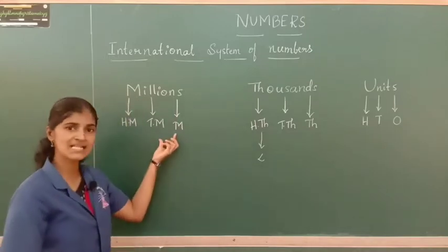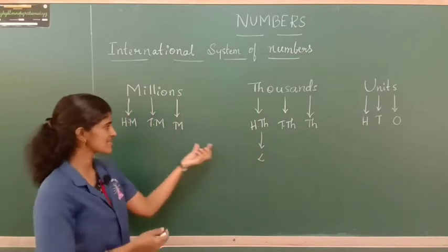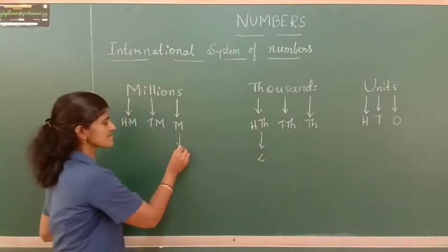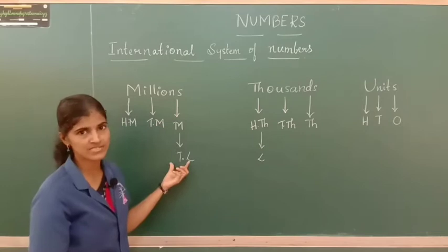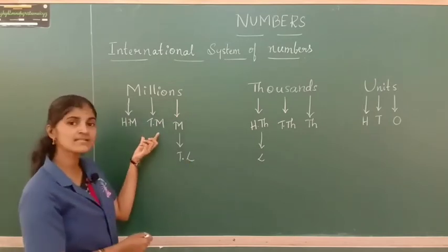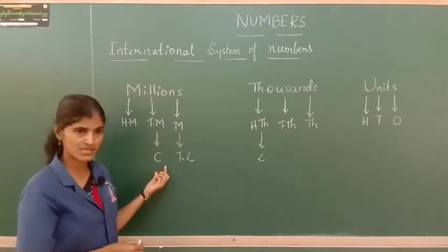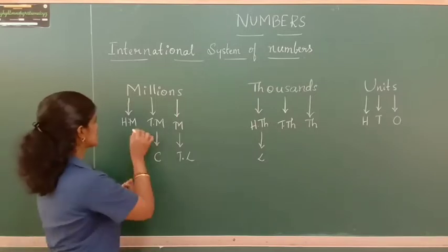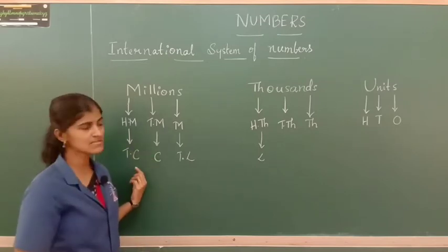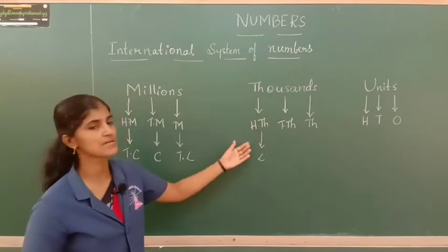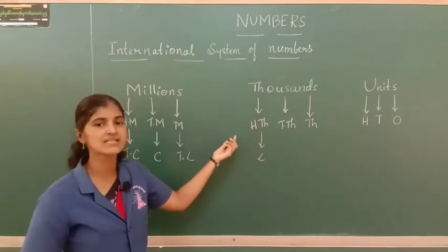Under millions, the first place is million, which is the same as ten lakh in the Indian system. Next is ten million, which is equal to crore. Then hundred million means ten crore. So the places change with different names but the value remains the same.